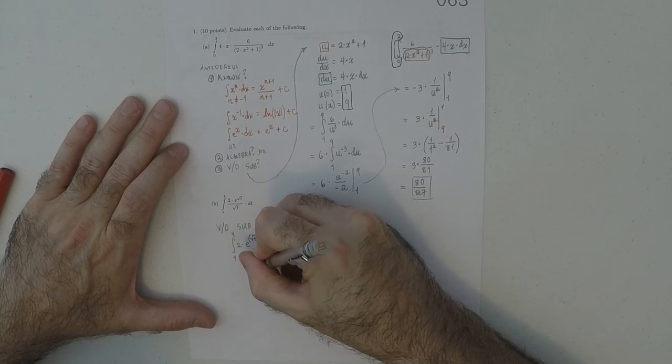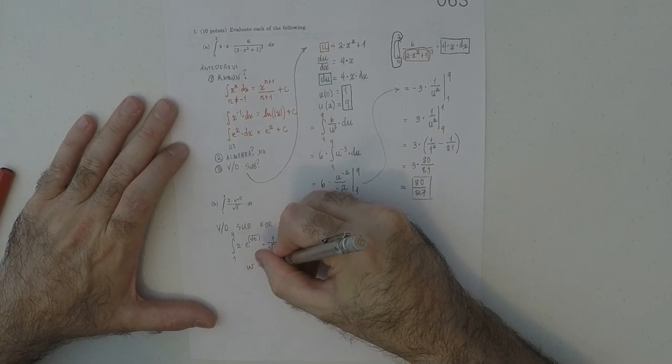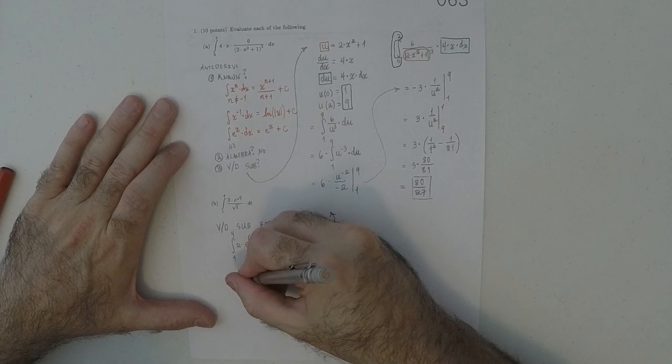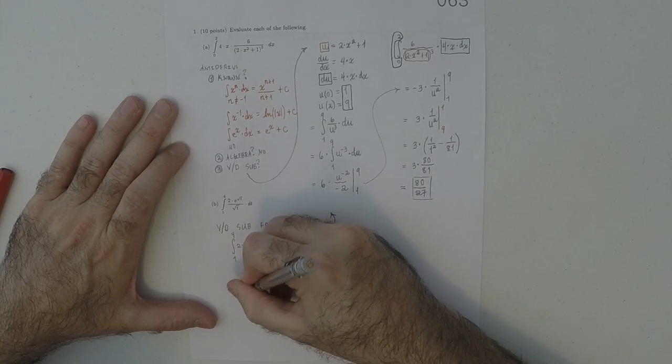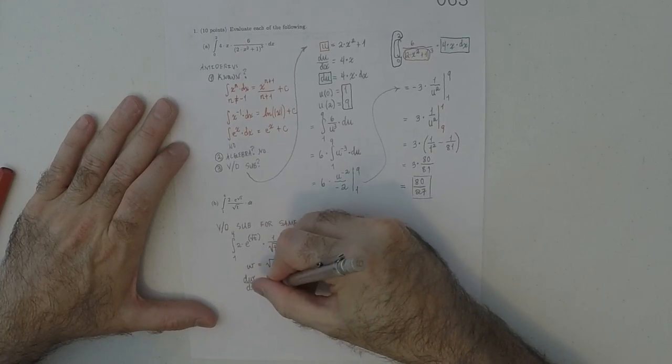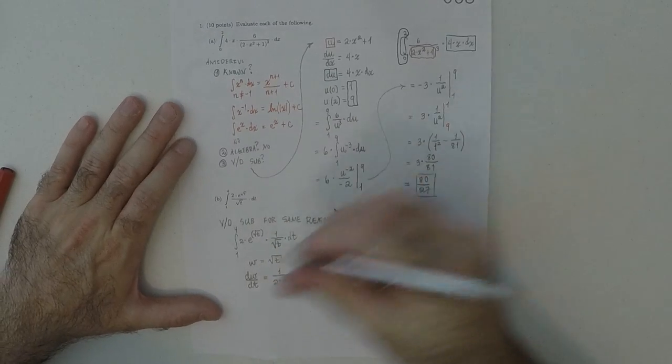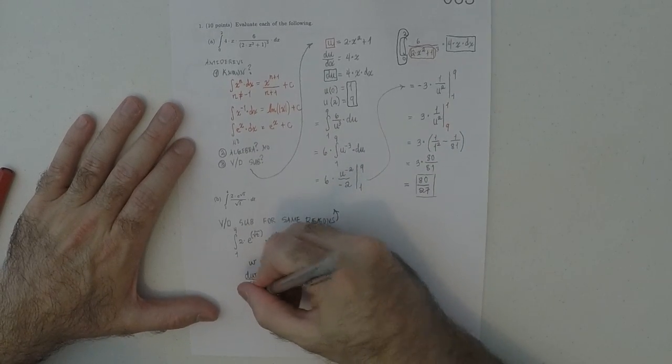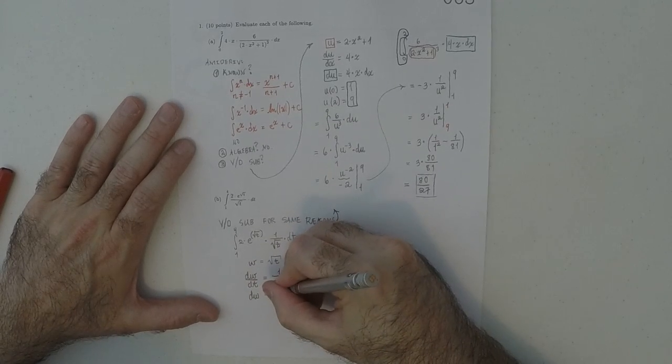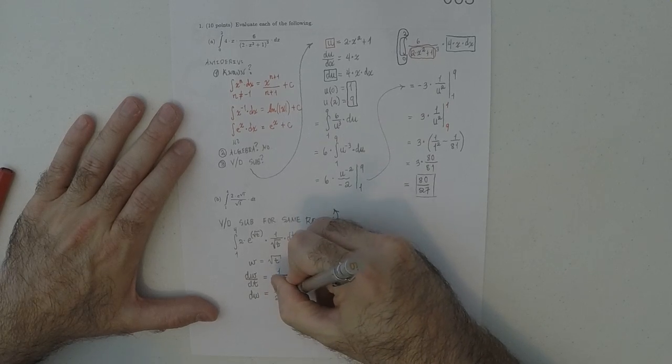So, w is square root of t. Therefore, dw dt is 1 over 2 square root t. So, dw is 1 over 2 square root t dt.